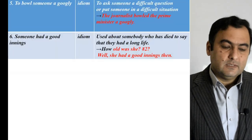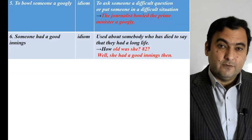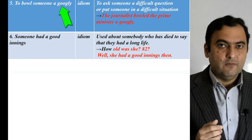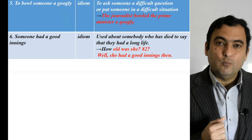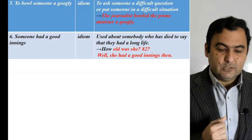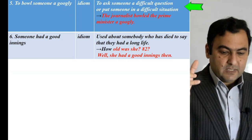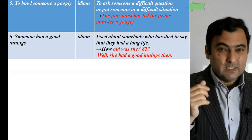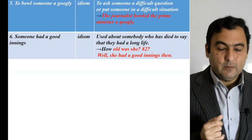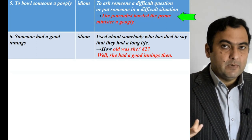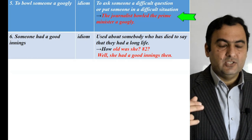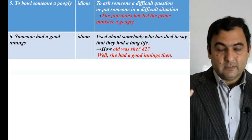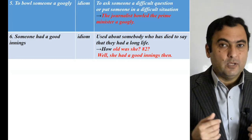The next idiom from cricket is to bowl someone a googly. A googly is a type of delivery in cricket. To bowl someone a googly means to ask someone a difficult question which they have no answer to, or to put them in a difficult situation. For example: the journalist bowled the prime minister a googly — his question surprised the politician and the politician had no answer.